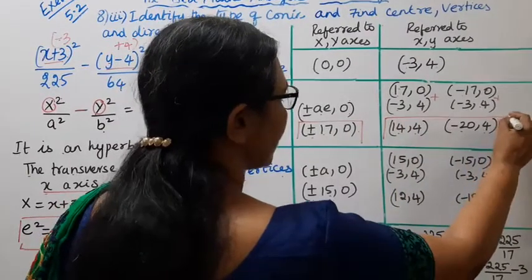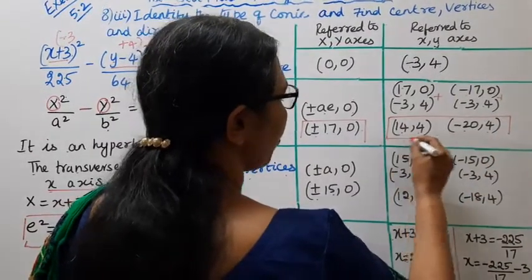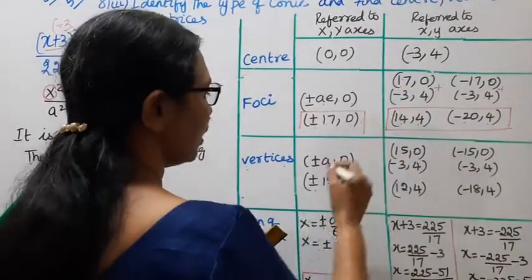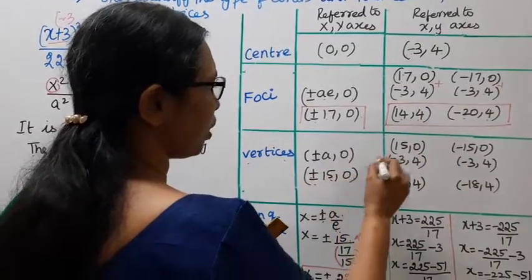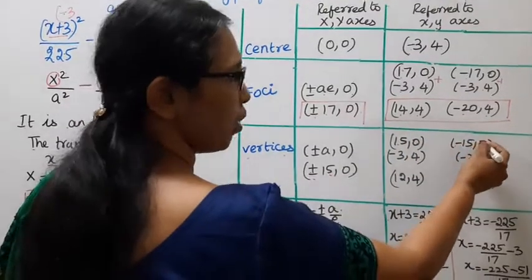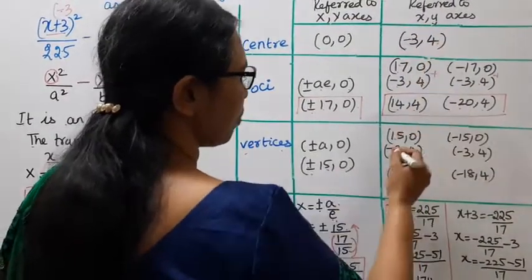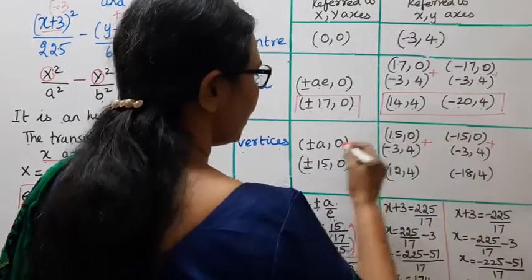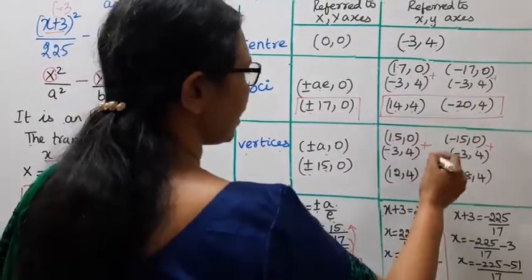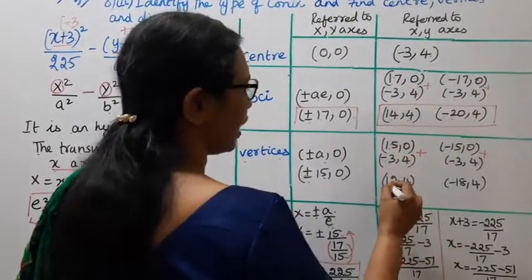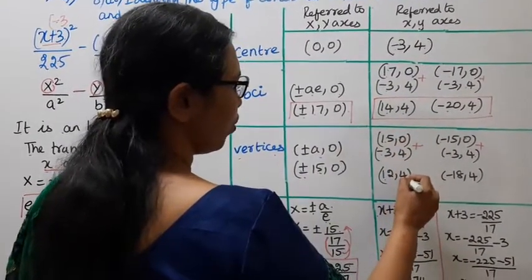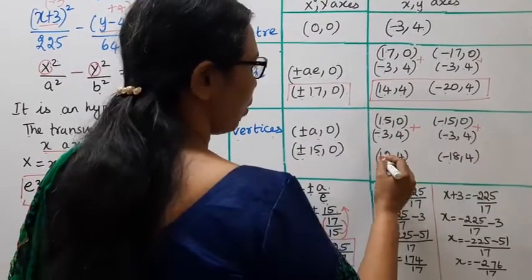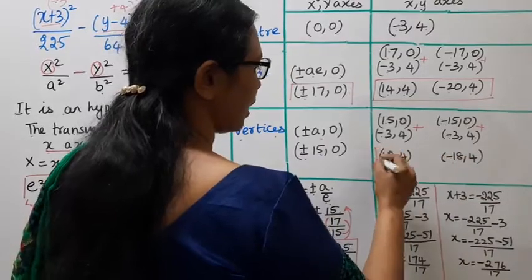The vertices in small x, y: adding ±15 to center (-3, 4) gives (-3+15, 4) = (12, 4) and (-3-15, 4) = (-18, 4). So the vertices are (12, 4) and (-18, 4).